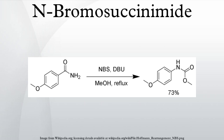Crude NBS gives better yield in the Wohl-Ziegler reaction. In other cases, impure NBS may give unreliable results. It can be purified by recrystallization from 90–95°C water.